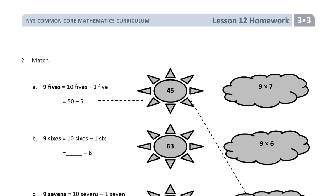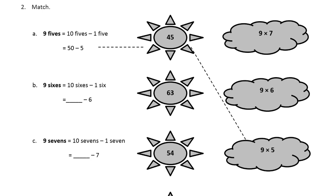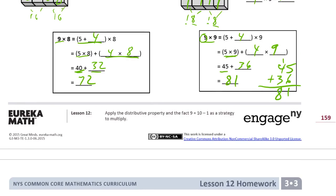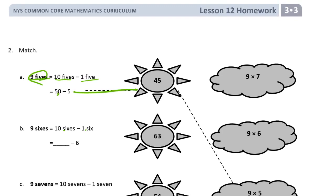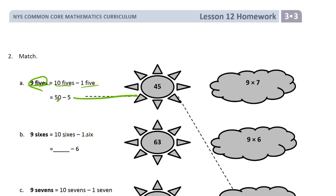Now for homework page 2, this is a big matching activity. I'm going to solve some of these and then draw the matches at the end. Nine 5s — the easiest way to think of nine 5s is it's almost ten 5s, so it's ten 5s minus one 5. Ten 5s is 50, so 50 minus 5 is 45. You match it up to 9 times 5. Nine 6s is the same as ten 6s minus one 6. On the first page we were adding to make 9s; now we're subtracting, because 10 is really easy and 9 is just a little bit less than 10.